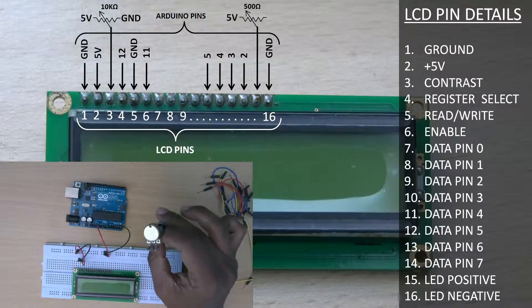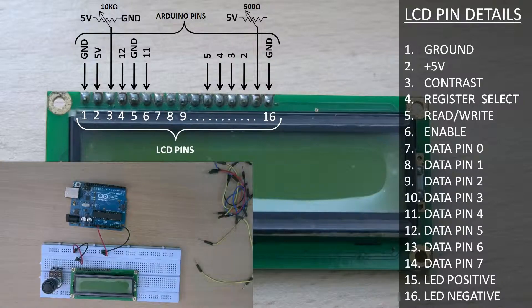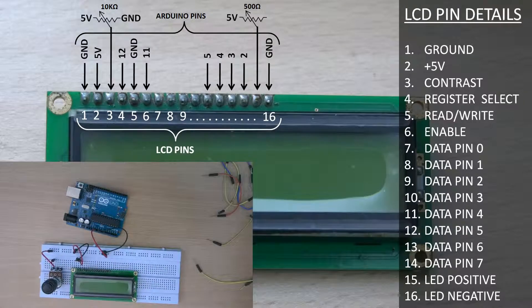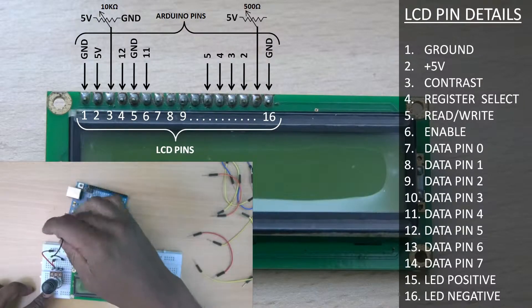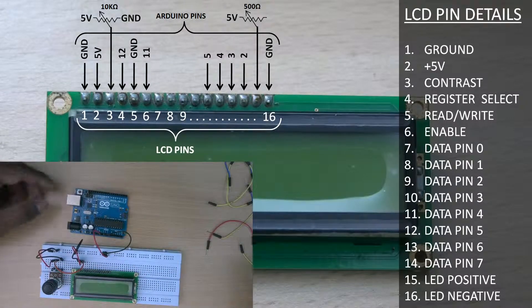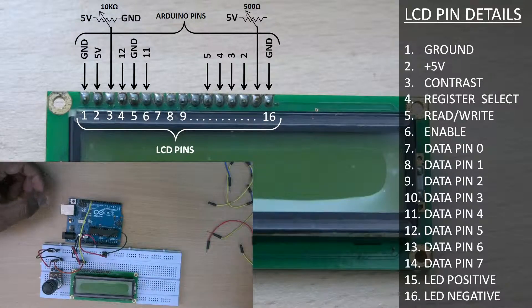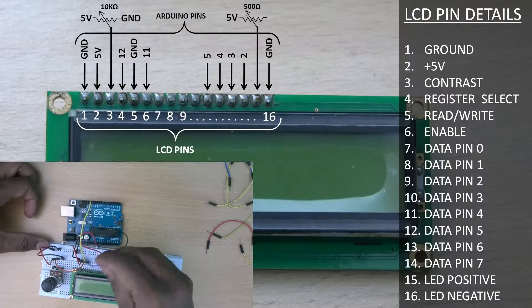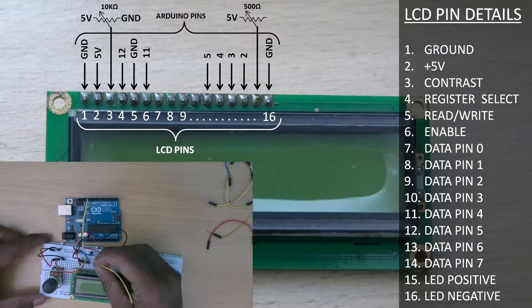LCD pin 4 is the register select pin which is to be connected to pin 12 of the Arduino board. LCD pin 5 is the read write pin. It is to be connected to ground of the Arduino board. LCD pin 6 is the enable pin. It is to be connected to pin 11 of the Arduino board.